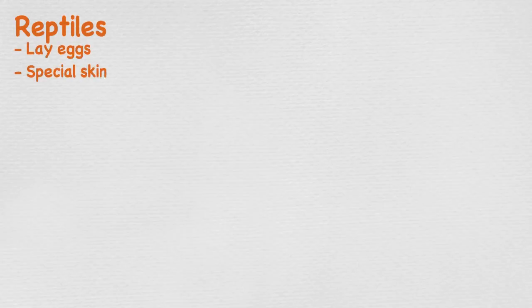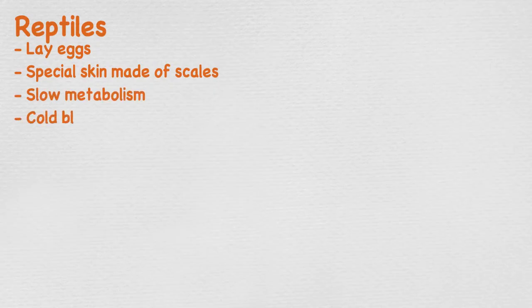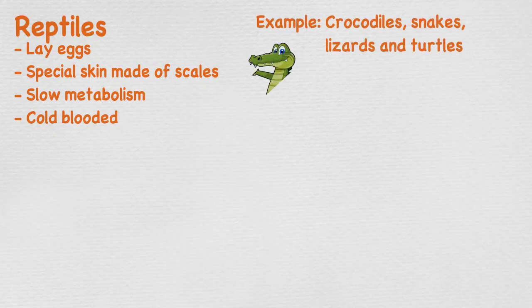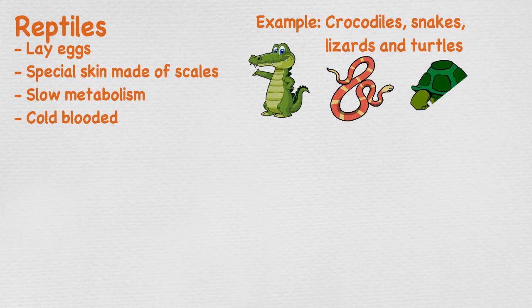Reptiles are generally oviparous. They are vertebrates covered in special skin made of scales, bony plates, or a combination of both. Because of their slow metabolism and heat-seeking behaviour, reptiles are cold-blooded. Examples include crocodiles, alligators, snakes, lizards, and turtles.